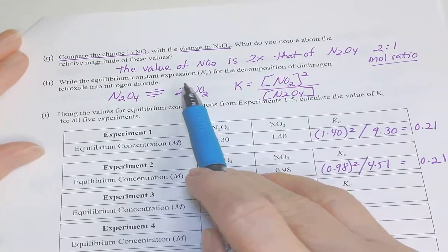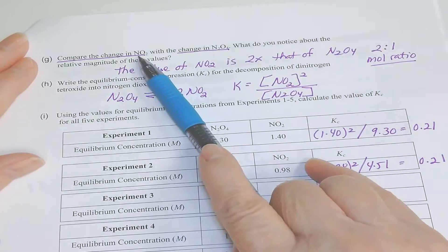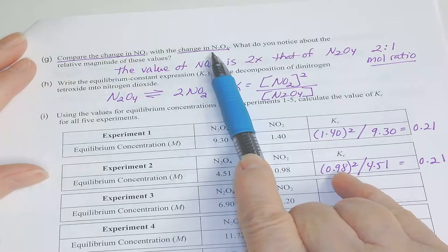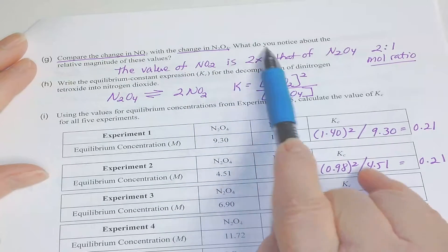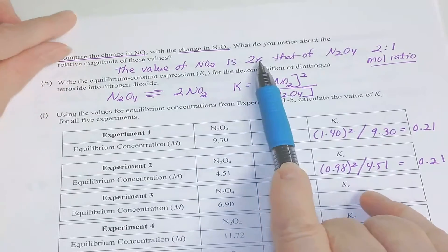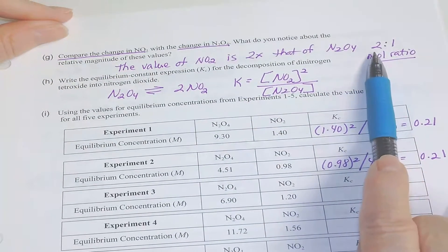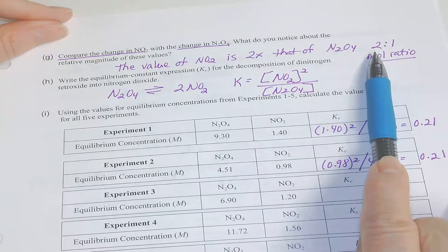We're going to compare that change of NO2 with the change of N2O4. If you look at all of those changes, you will see that the NO2 is twice that of N2O4 due to the 2 to 1 mole ratio.